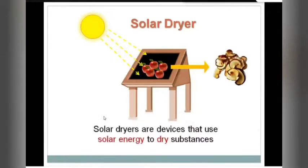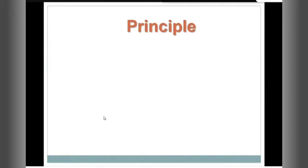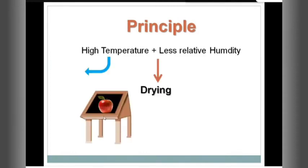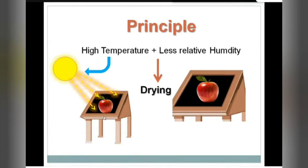Every magic has certain principles that must be followed. The first principle is high temperature — maintained by the sun when sun rays fall on the solar dryer and heat it up. The second principle is less relative humidity. The term 'relative' means we are comparing between two things — here, the comparison is between the internal environment of the solar dryer and the internal environment of the fruit.